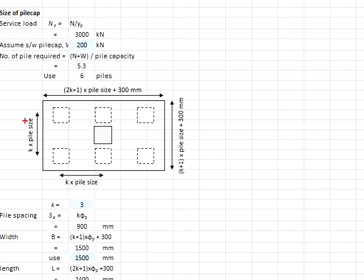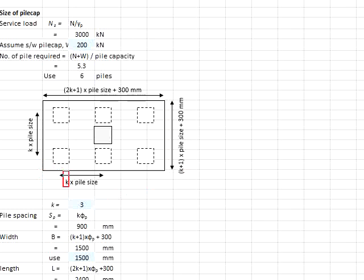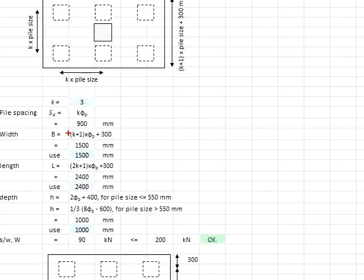At the shortest span, the spacing between piles is k times the pile size, plus one full pile size (half on each end), plus 150 mm on each side. That gives the formula: (k + 1) × pile size + 300 mm. Taking k = 3, the pile spacing is 3 × 300 = 900 mm. Substituting into the formulas for B and L gives dimensions of 1.5 m and 2.4 m.